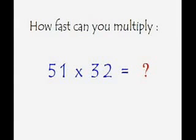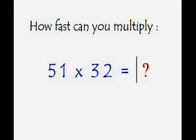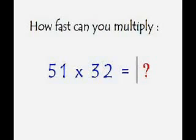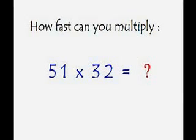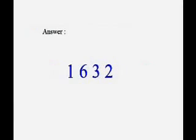How fast can you multiply 51 with 32? You have five seconds — your time starts now. The correct answer is 1632. Now let's quickly see the usual way of doing it.